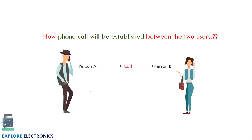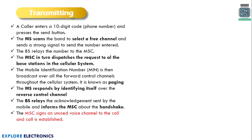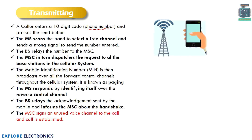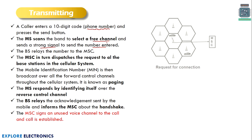If person A wants to communicate with person B, how actually the call will be established and what are all the processes that take place. First, transmitting: when a caller enters the 10-digit code — the phone number of person B — and presses the send button, the mobile starts to scan for a free channel available to communicate with the base station, selects the free channel, and sends a strong signal to send the number which was entered.